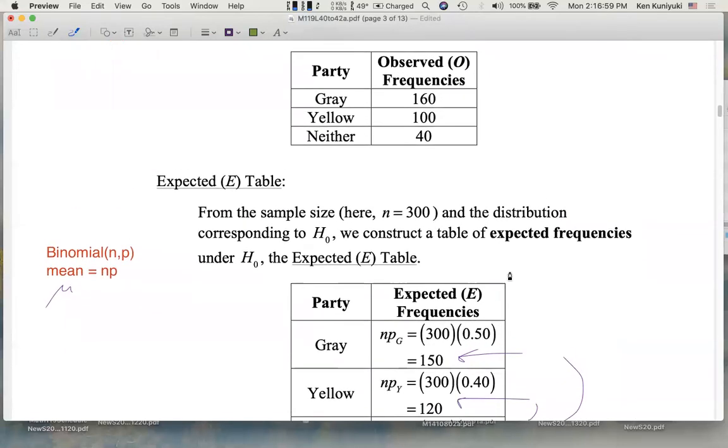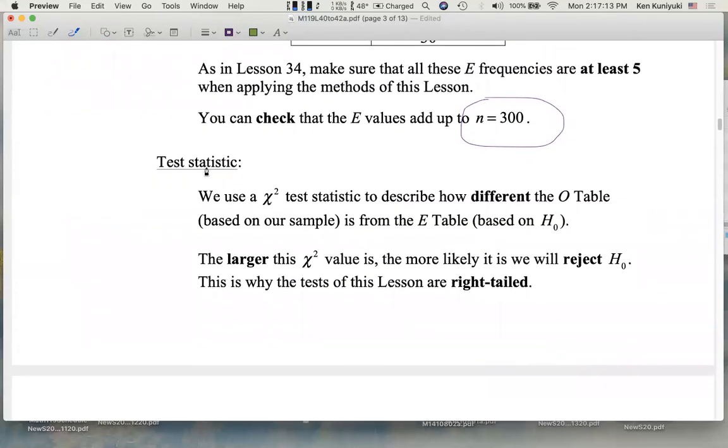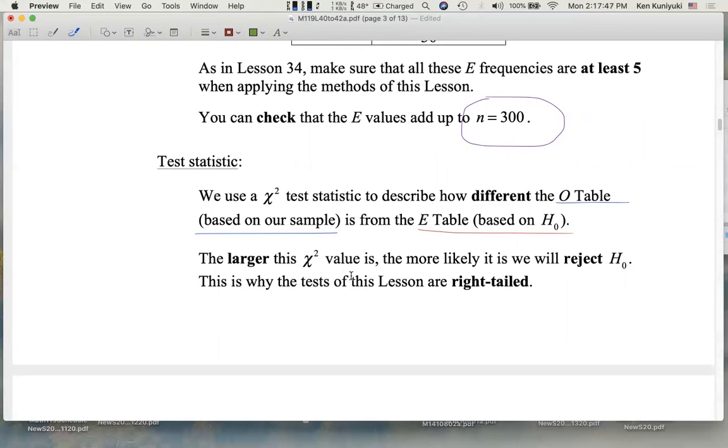The chi-square test statistic is going to measure the discrepancy between these two tables. The chi-square test statistic we're going to use is a single measure that will describe how these two tables are different. The O table is based on our sample. The E table is based on the null. The larger this chi-square value is, the greater the discrepancy, the more likely it is we will reject the null.